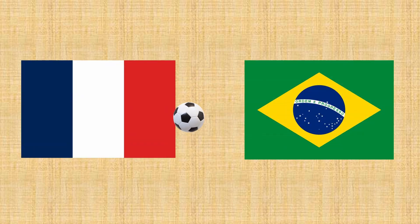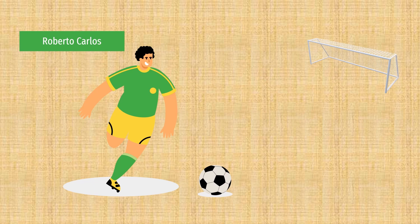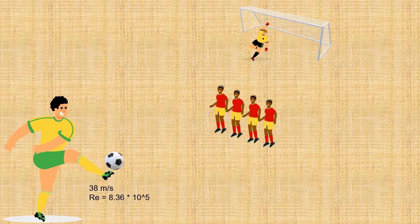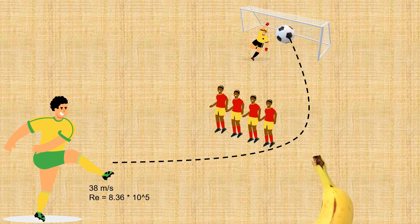In 1997, in a football game between France and Brazil, Robert Carlos, a young Brazilian player, kicked the ball and just before going out of bounds, the ball hooked to the left, which is known as the banana kick.